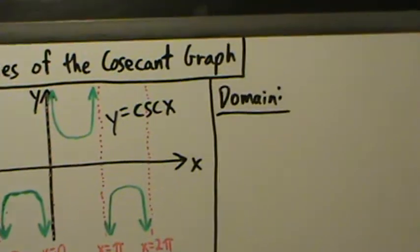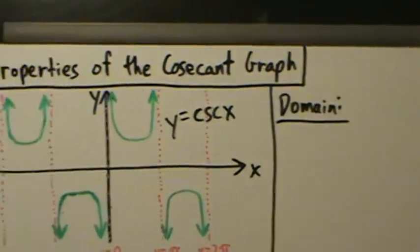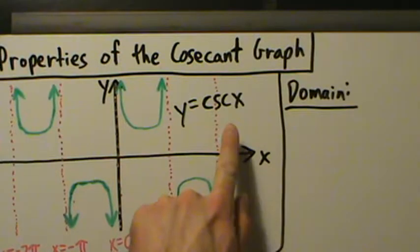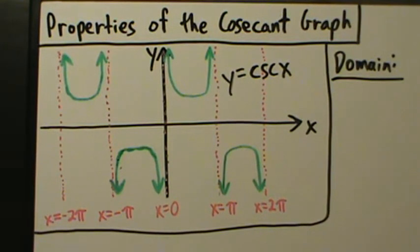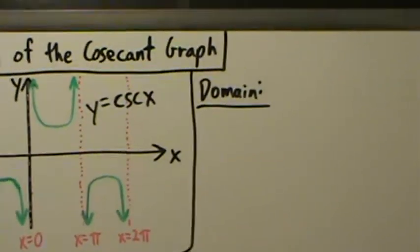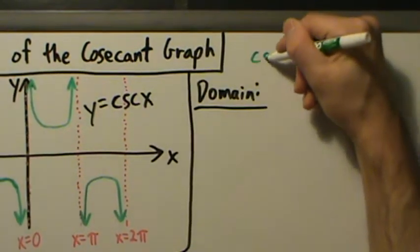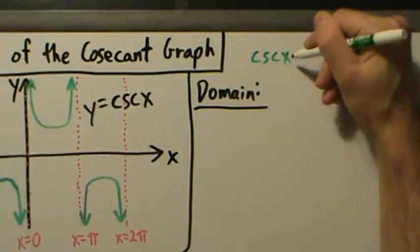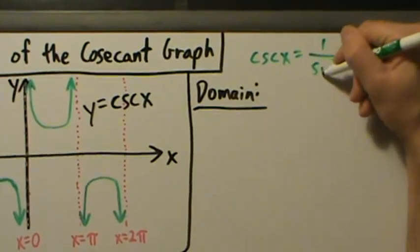So the domain — remember, the domain is the set of all the values that x is allowed to be. We have y equals the cosecant of x, and here's the graph. Before we continue, let's write down that cosecant of x equals 1 over the sine of x.